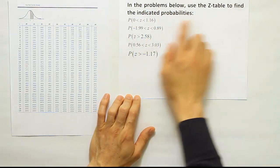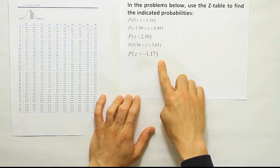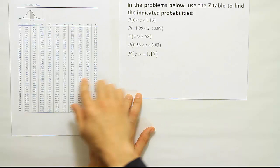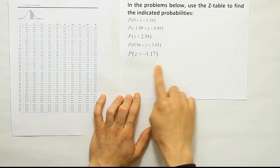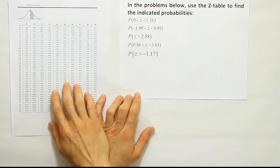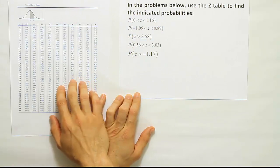In the problems below, use the z-table to find the indicated probabilities. So we have five little probability problems that we want to use to help learn the z-table. These five problems cover the five unique cases that you can encounter when trying to find probability using this z-table. If you master all five of these problems, then you know how to use this table to find probability inside and out.